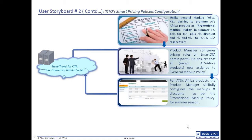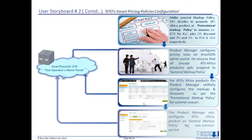After the planning has been completed, the product manager configures these pricing rules onto the Smart OTA admin portal. He makes sure that all non-ATS African products are configured under the general markup policy. However, for ATS Africa products, they are all marked under the promotional markup policy for the summer season. The product manager also takes care to mark the ATS Africa product under the general markup policy for the non-summer period.